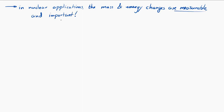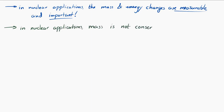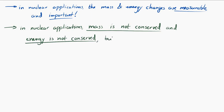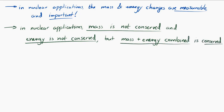In nuclear applications, mass is no longer conserved and energy is no longer conserved individually. Instead, it is mass and energy combined that are conserved. So it's a different perspective — neither mass alone nor energy alone is conserved; it is the combination of mass and energy which is conserved.